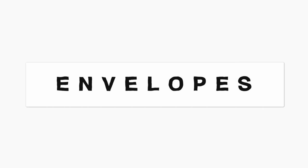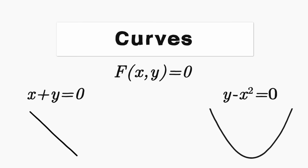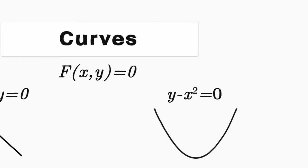To talk about envelopes, let's talk about curves. We can represent a curve implicitly as a function of x and y. f of xy equals zero. For example, a line looks like x plus y equals zero, a parabola like y minus x squared equals zero, and so on.